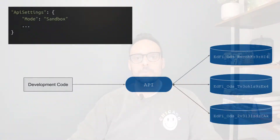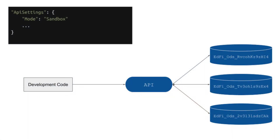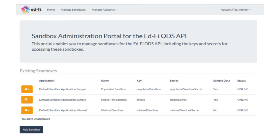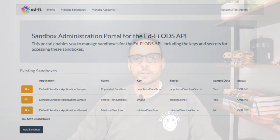Sandbox. This API mode is used in development environments and should never be used in production. This API mode should be used only when you are using the Sandbox administration portal. This application makes it very easy to create and destroy ODS instances for when you are engaging in rapid development and need to frequently start with a fresh ODS.